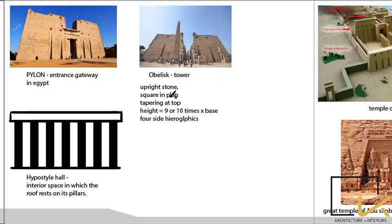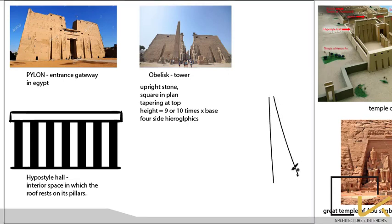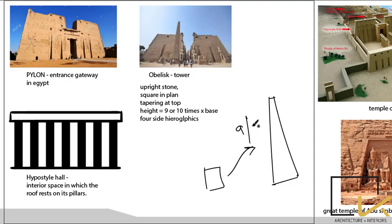The obelisk has a square plan and tapers at the top. Its height is nine or ten times the base dimension. Hieroglyphic carvings appear on all four sides of the obelisk.